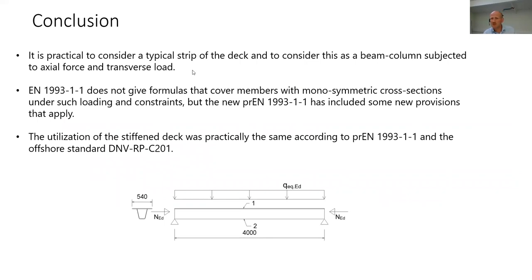In conclusion, it's practical to consider a typical strip of the deck and to consider this as a beam-column subjected to axial force and transverse load. The general standard EN 1993-1-1 does not give formulas that cover members with monosymmetric cross-sections under such loading and constraints, but the new preliminary one has included some new provisions that apply. The utilization of the stiffened plate was practically the same according to the preliminary Eurocode and the offshore standard as we checked.